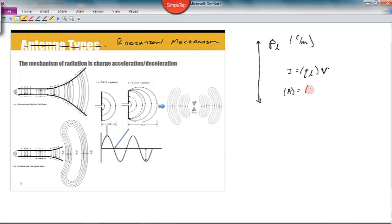So units for current are amps. We know that charge density's units are coulombs per meter, and velocity is meters per second. So we get our basic definition of amps, which is coulombs per second. It's charge per second. So this is an accurate definition of current.